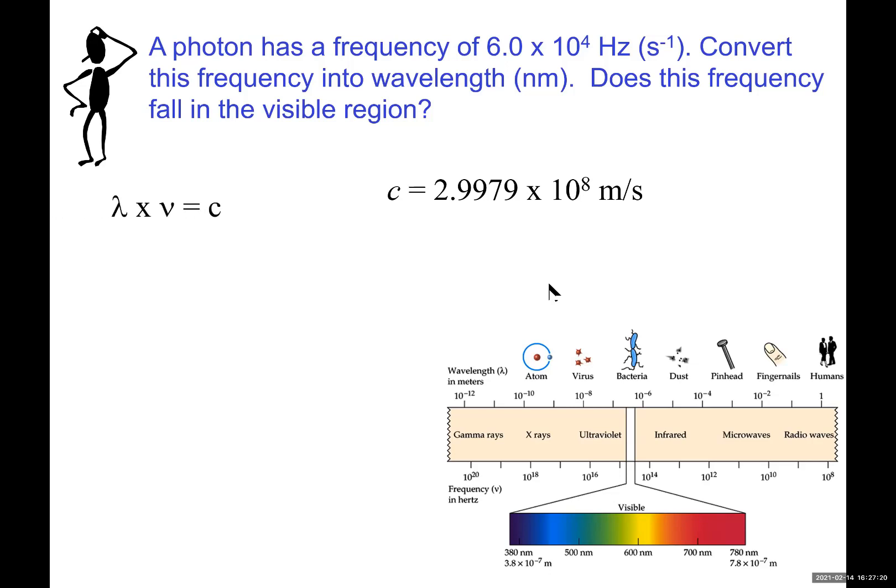Speed of light is frequency times wavelength. We have the speed of light: 2.9979 times 10 to the power of 8 meters per second. We're giving you frequency, we're giving you nu. All you have to do is solve this equation for lambda. I divide both sides by nu and say lambda equals speed of light divided by frequency.